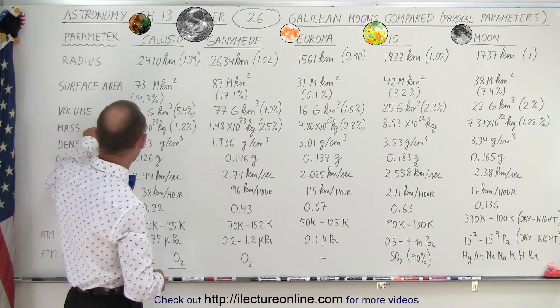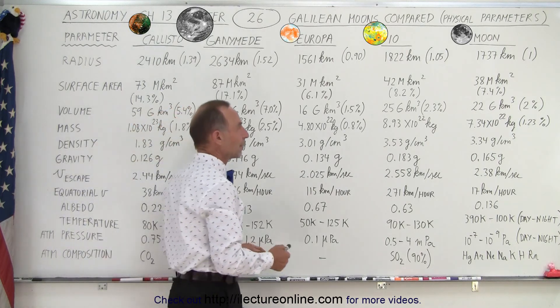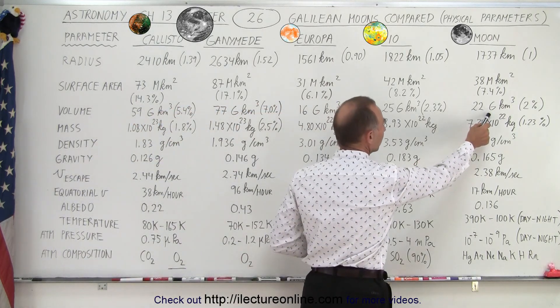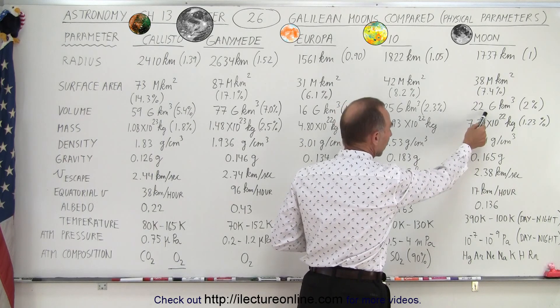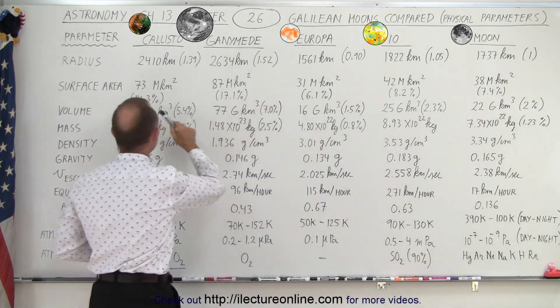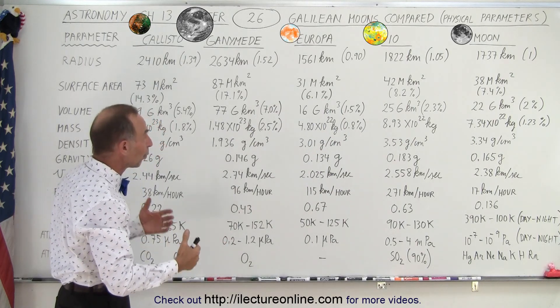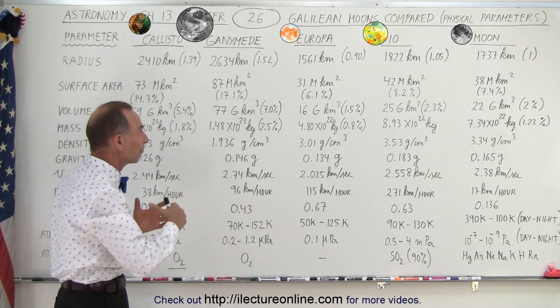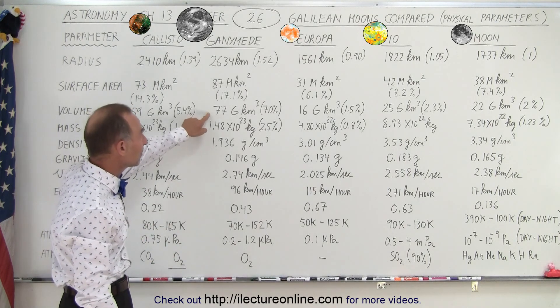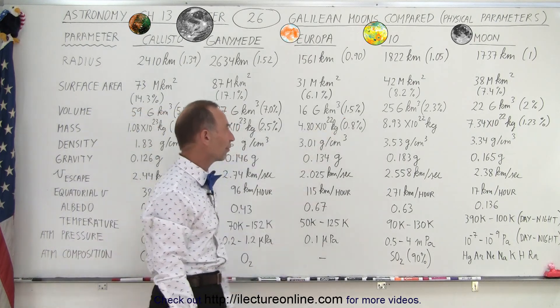As far as the volume is concerned, notice we're talking about giga cubic kilometers, so billion cubic kilometers: 22, 25, 16, 77 and 59. So relatively speaking about 1.5 to 7% the volume of the Earth, 7% for Ganymede and 1.5% for Europa.